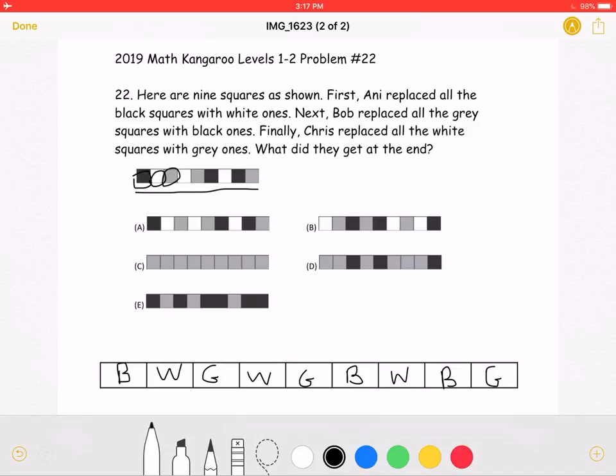Then, it says that in the problem, Annie replaced all the black squares with white ones. So let's go ahead and erase every time it's black and replace all of that with white.